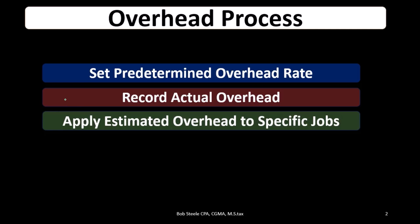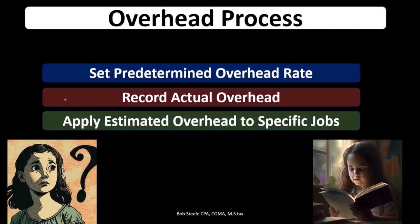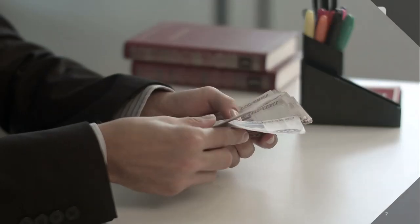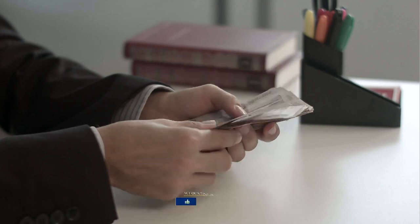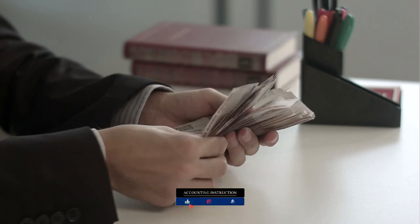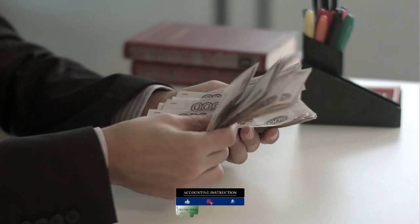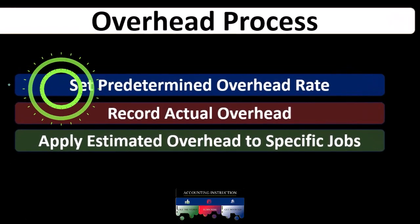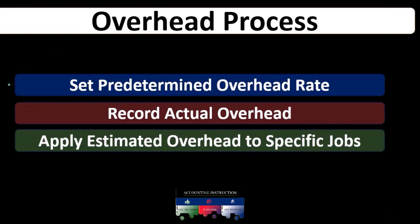The overhead we're going to incur includes indirect labor, indirect materials, and all the other items in the overhead bucket, which we then have to apply to jobs. As we go through the month, remember these two things are happening at the same time — we're incurring overhead costs constantly, and we're applying overhead to jobs as we go. So the first thing we need to do at the beginning of the month is set the predetermined overhead rate so we have it available at any given time.